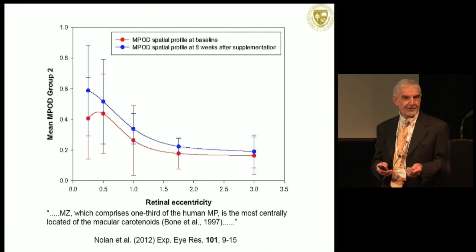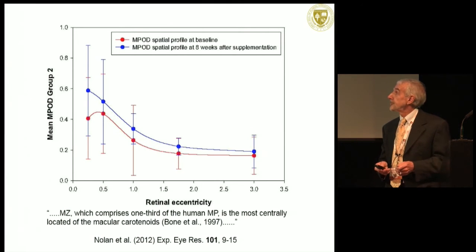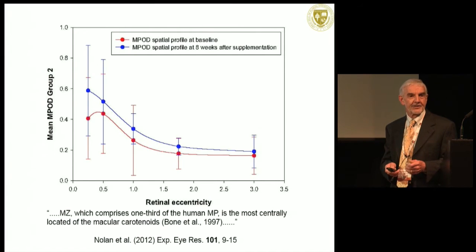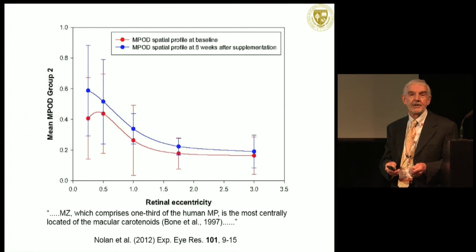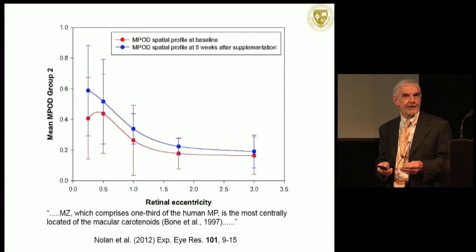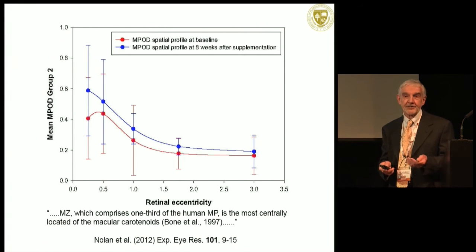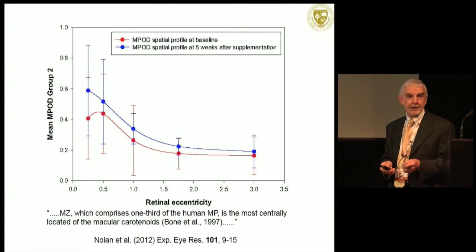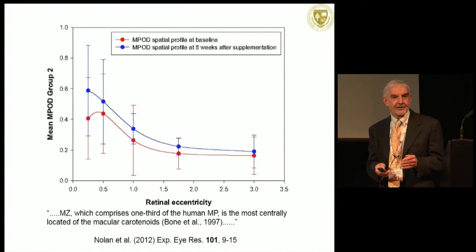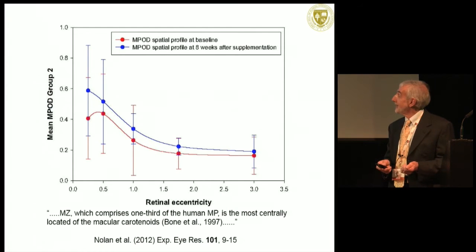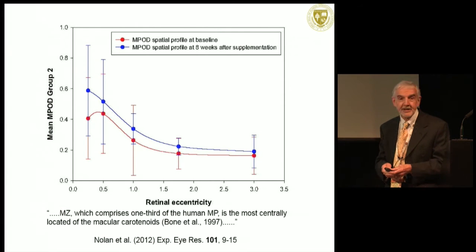However, we've just heard an excellent talk from John Nolan, and this is from one of his earlier studies in which they selected subjects having this atypical macular pigment spatial profile shown in red with the characteristic central dip. They divided the subjects up into three groups, two of which received a mesozeaxanthine-containing supplement. At the end of the supplementation period, the two groups that had received mesozeaxanthine ended up with the central dip filled in, as indicated by the blue line.